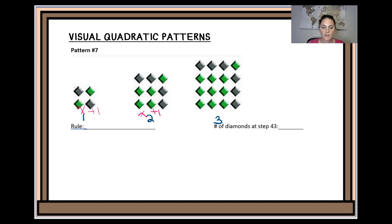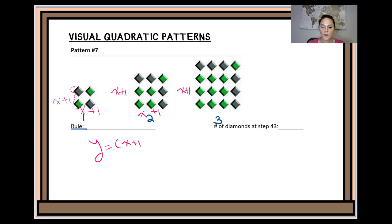If I go ahead and look at the other dimension, I can see that it is also position number plus 1, so x plus 1. To write down the rule, I'm going to write y equals (x + 1) times (x + 1). Then I can use the distributive property to find the standard form.